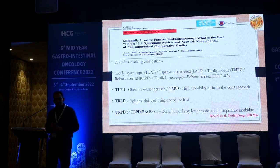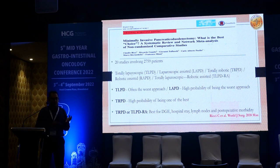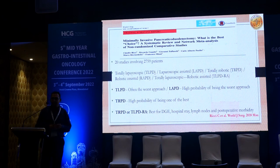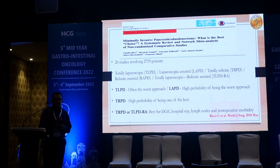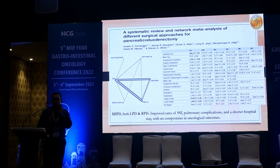A network meta-analysis assessed the best approach among all techniques — total laparoscopic, laparoscopic-assisted, totally robotic, robotic-assisted, and hybrid (laparoscopic resection with robotic reconstruction). They found that total laparoscopic PD has a high probability of being the worst approach, total robotic has a high probability of being one of the best, and the hybrid approach is best for DGE, hospital stay, lymph node yield, and post-operative morbidity. Another network meta-analysis comparing open, laparoscopic, and robotic approaches also mentioned that MIPD has improved rates of SSI, pulmonary complications, and shorter hospital stay with no compromise in oncological outcomes.